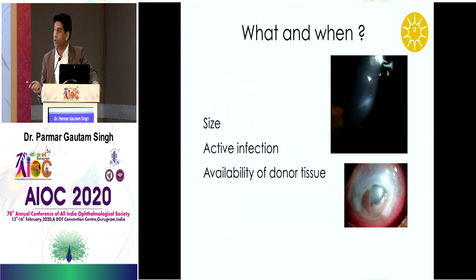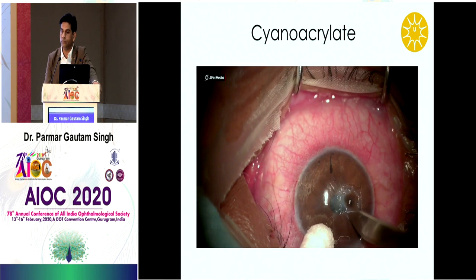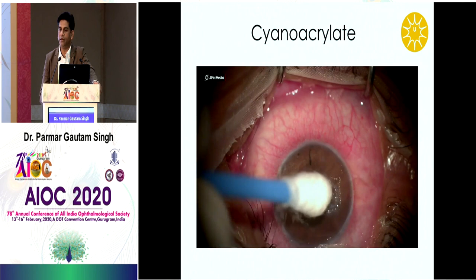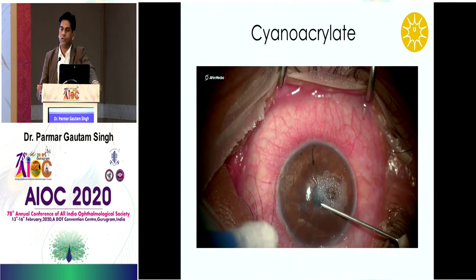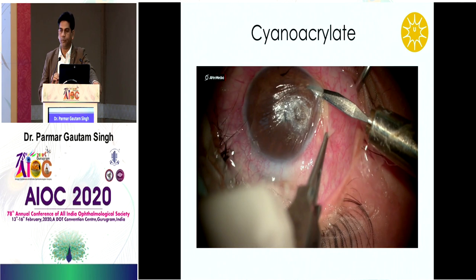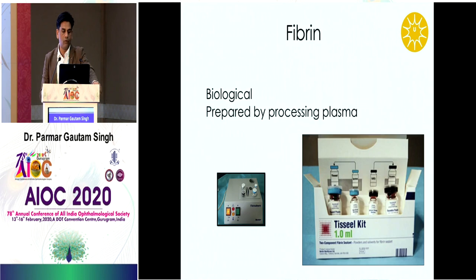Regarding cyanoacrylate glue technique: first freshen up all necrotic epithelium, then apply a small amount of glue on the needle itself and paint it over the perforation — this gives a smooth application. Smooth the glue so it is less damaging to a contact lens placed on top. Fibrin glue can also be used — it is better tolerated, non-toxic to the surface, with good tensile strength, but carries a risk of blood-borne disease transmission.